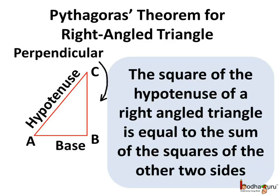The Pythagoras theorem says the square of the hypotenuse of a right-angled triangle is equal to the sum of the squares of the other two sides. So according to it, the square of the hypotenuse is equal to the square of the base plus the square of the perpendicular.